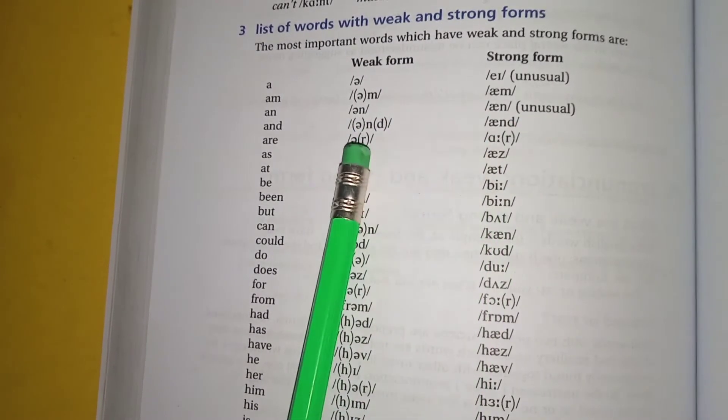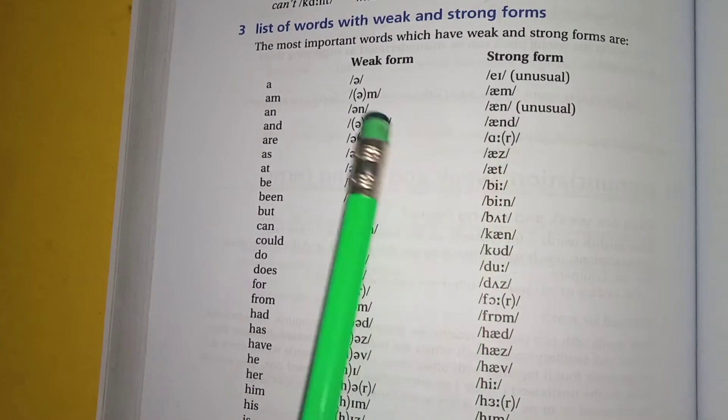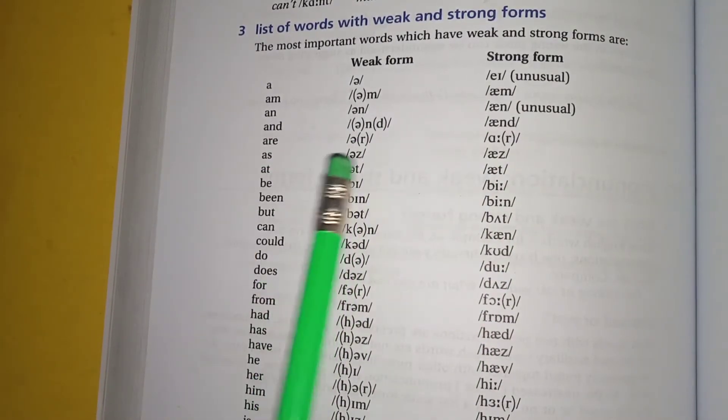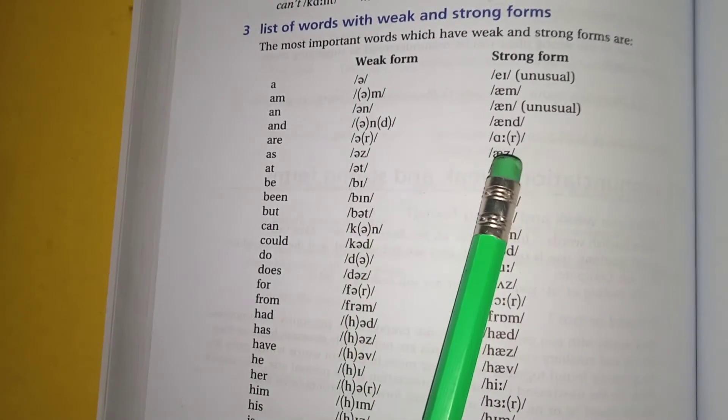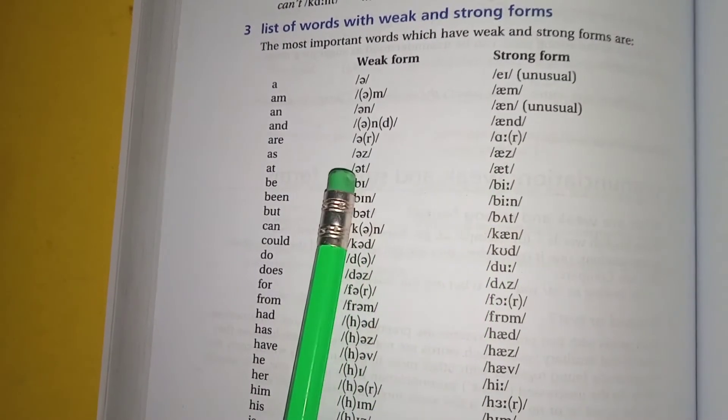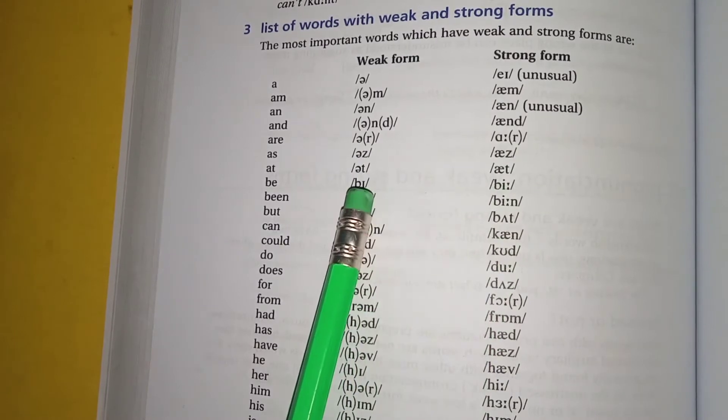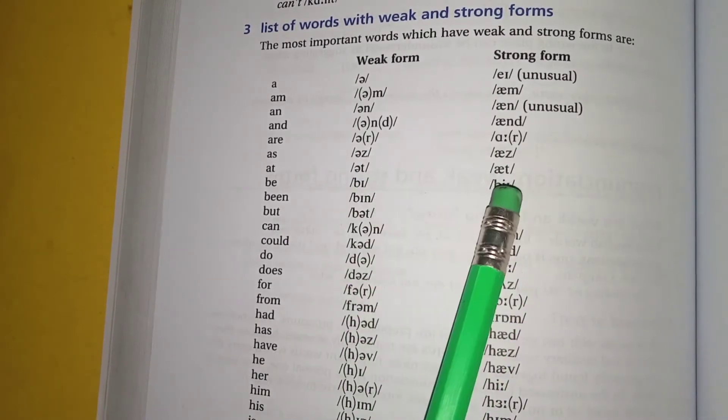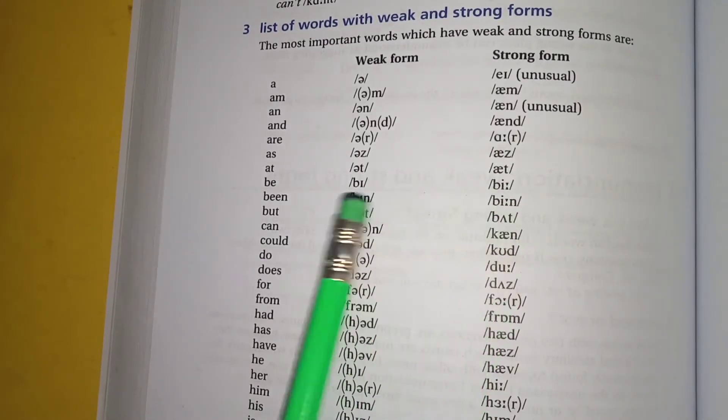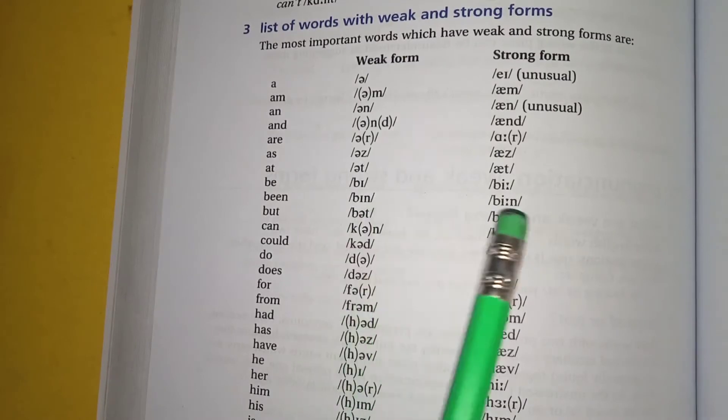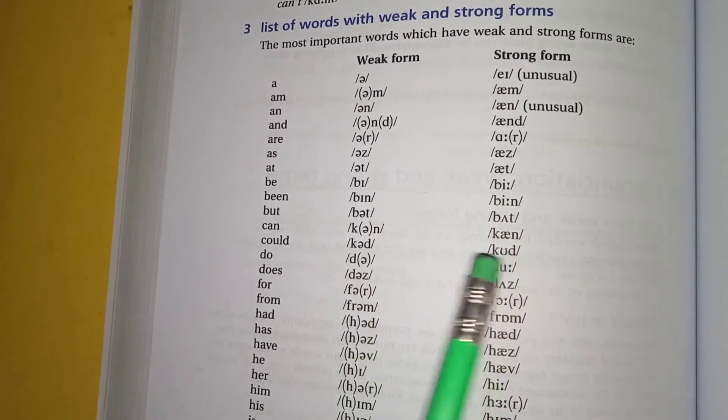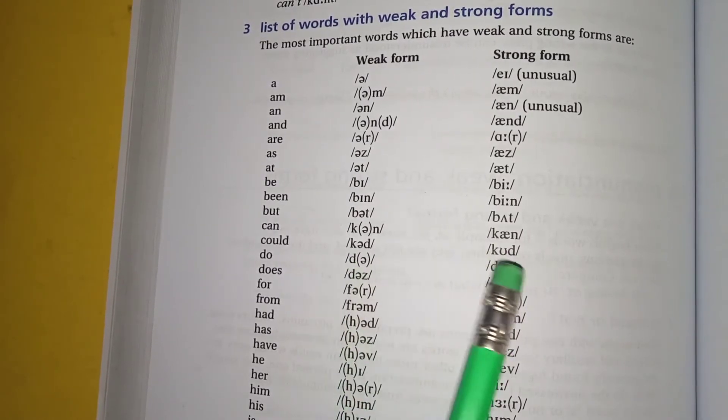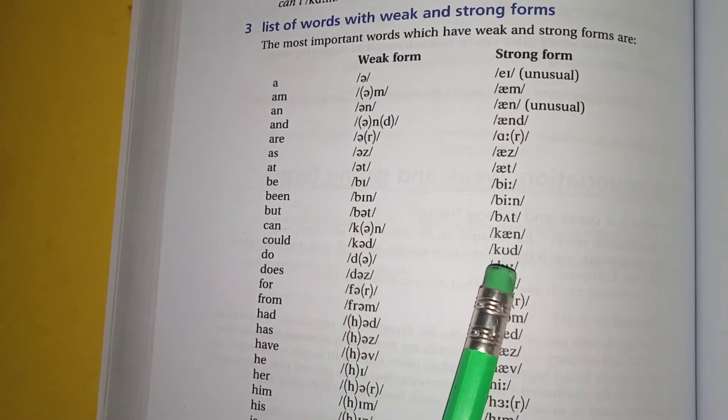As, as, as, as. At, at, at, at. Be, bee, bee, bee. Bin, been, bin, bin, been. But, but, but, but, but. Can, can, can, can, can, can, can. Could, could, could, could, could. Do, do, do, do, do. Does.